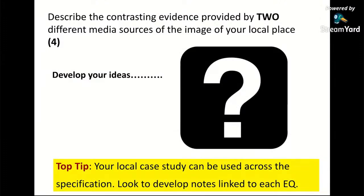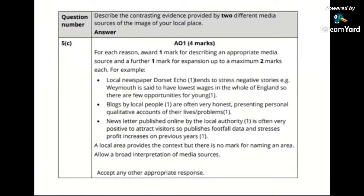If you were doing an exam-style question — 'Describe the contrasting evidence provided by two different sources of the image of your local place' — you could simply take two of those media sources. The mark scheme is generic: local newspapers, blogs, and newsletters by a local authority. These are just examples not linked to a specific local case study, but quite helpful.